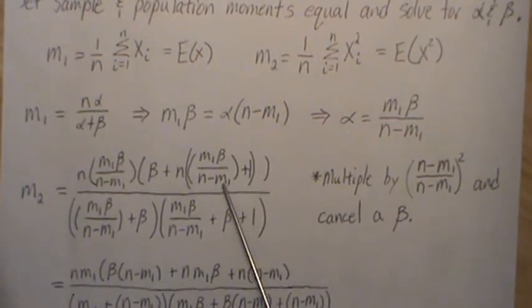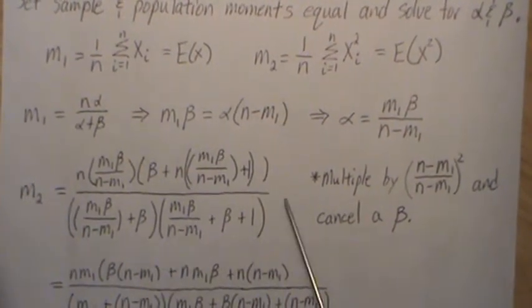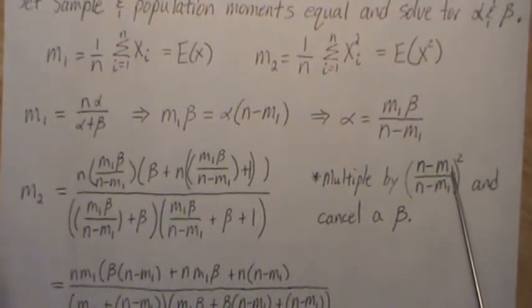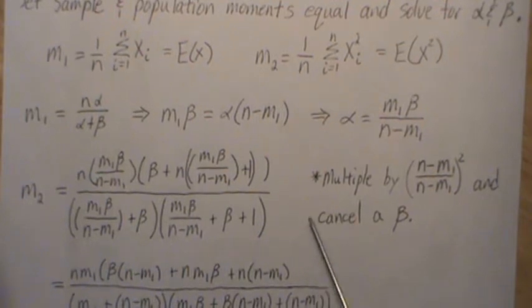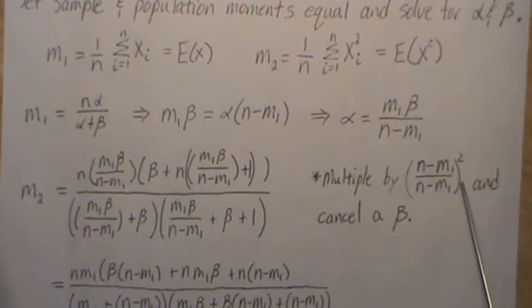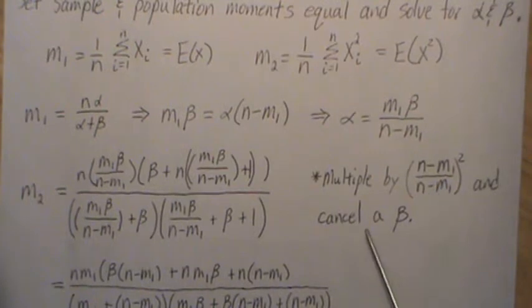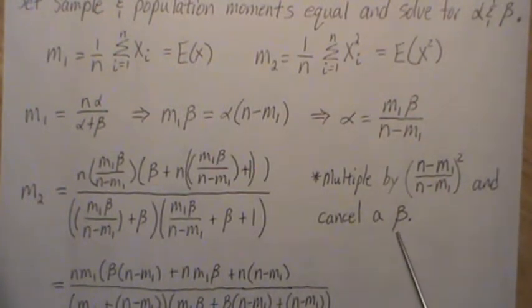Now what I want to do is get rid of these denominators. So I'm going to multiply the top by n minus m1 squared, and the denominator by n minus m1 squared. So we're multiplying by 1, so it doesn't change it.